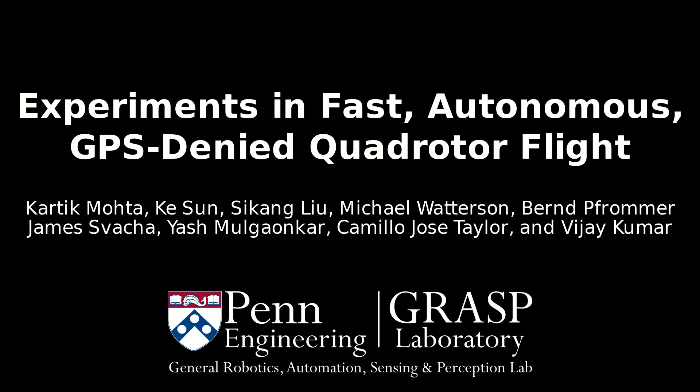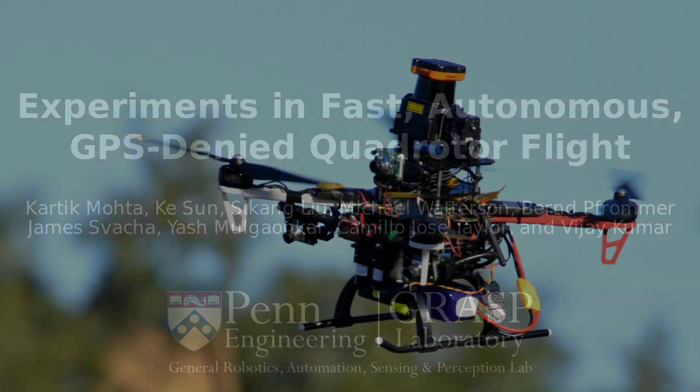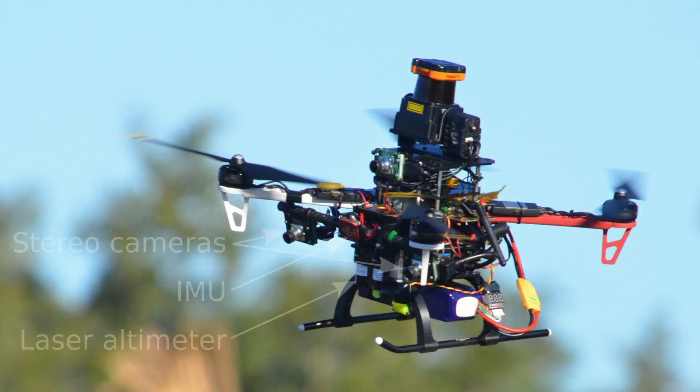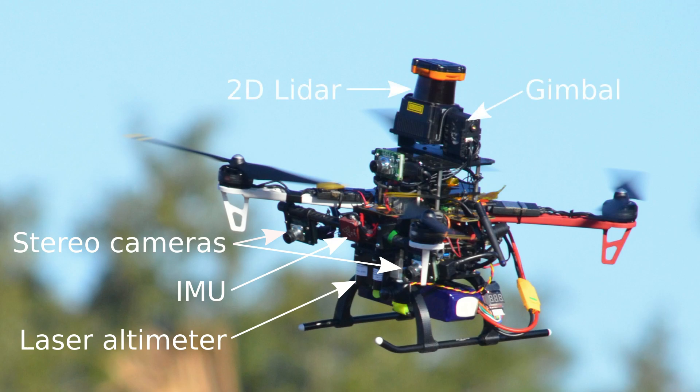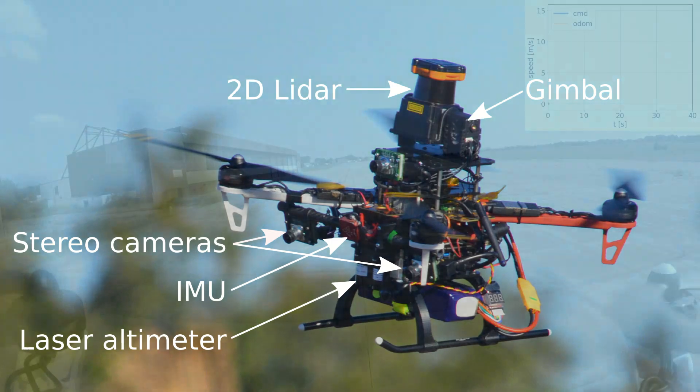In this video, we show our autonomous quadrotor system that is able to quickly navigate through obstacle-rich environments. The robot uses stereo cameras, an IMU, and a laser altimeter for state estimation, a 2D LiDAR mounted on a nodding gimbal for mapping, and an onboard Intel NUC i7 computer for all the computation.